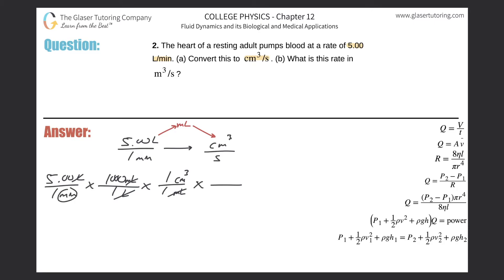So minutes are now on the top because they'll cancel that way, and then seconds on the bottom. We know there's 60 seconds for every minute. Now we're left with cubic centimeters per second. It's going to be 5 times 1000, then divide by 60, which gives us 83.3.